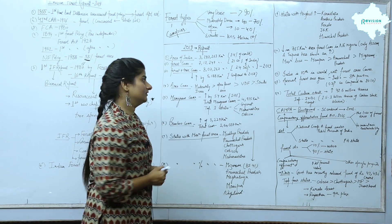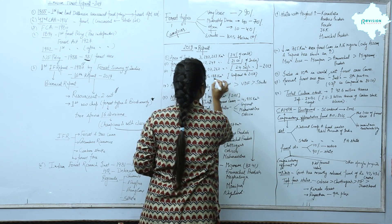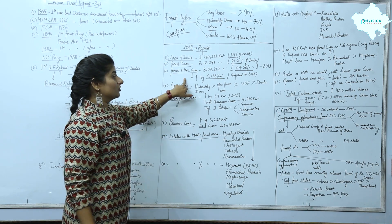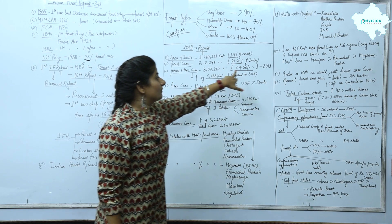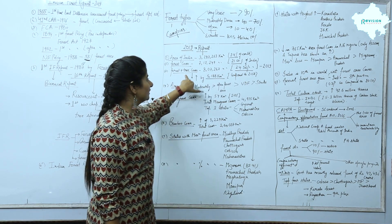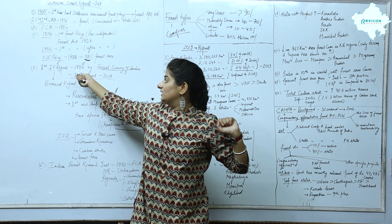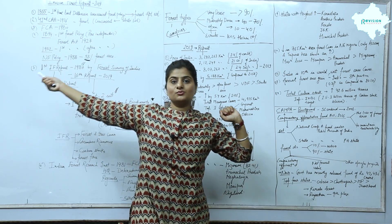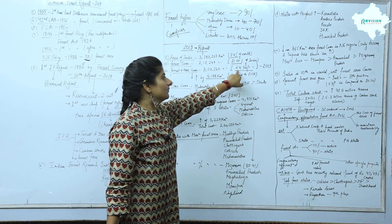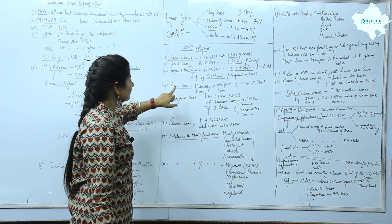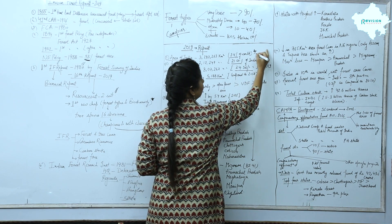The forest cover has increased by 43% compared to 2017. You must remember these percentages. We are at 24.56% forest and tree cover combined — this is a factual figure you need to remember very importantly.